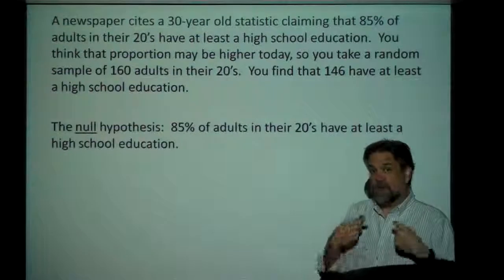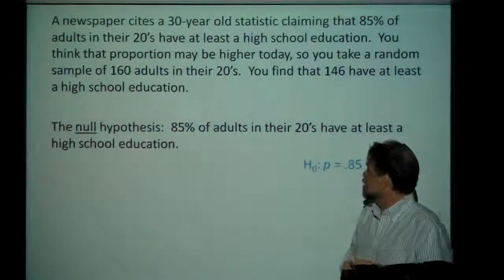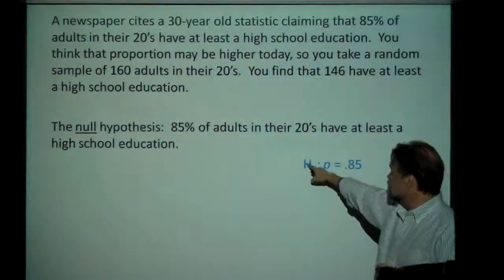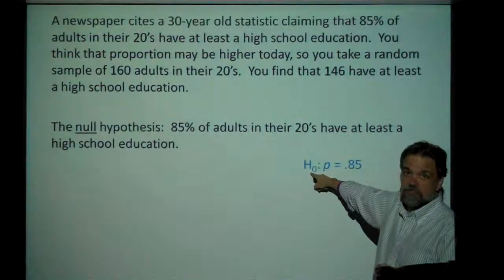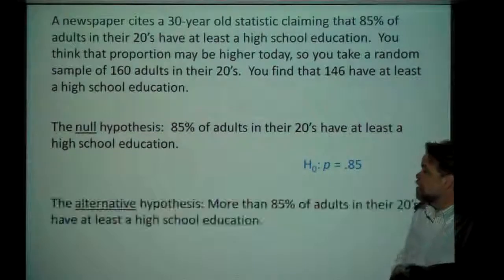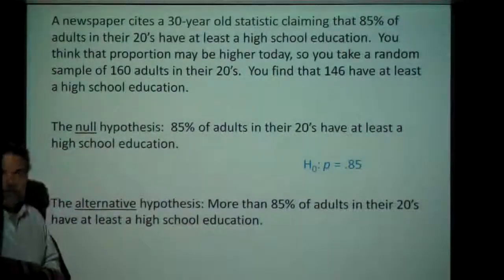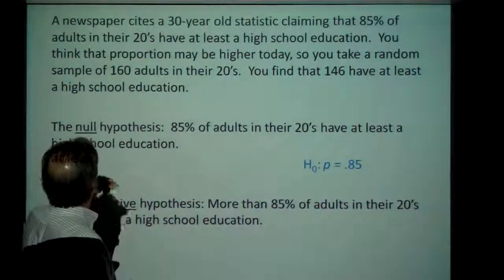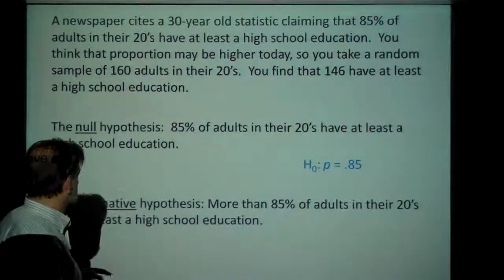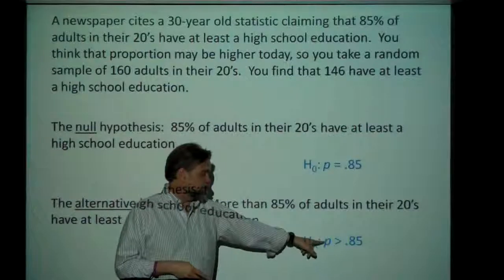I don't believe that. What I'm going to try to prove is the alternative hypothesis. The notation for writing the null hypothesis is H with a zero subscript — H-null. H-null is that P equals 0.85. My alternative hypothesis is that more than 85% of adults in their 20s have a high school education — because the problem states that I think it may be higher today. If I thought it was lower, my alternative hypothesis would be less than 85%. This is written H-sub-A: P is greater than 0.85.